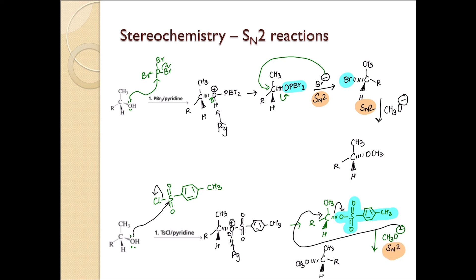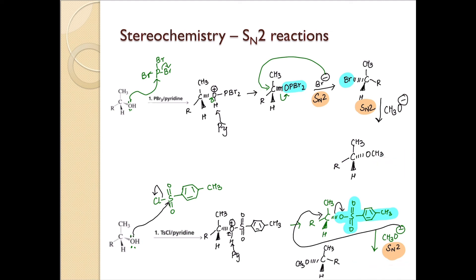While in the first case there are two SN2 reactions, here there is only one SN2 reaction, and therefore it results in an inversion of configuration, whereas the first reaction results in retention of configuration because of the two SN2 reactions — a double SN2 mechanism.